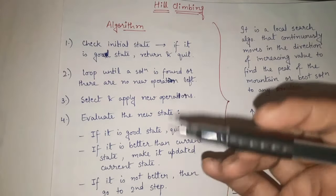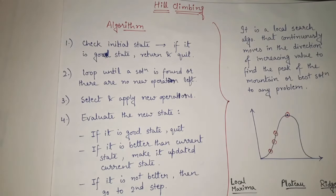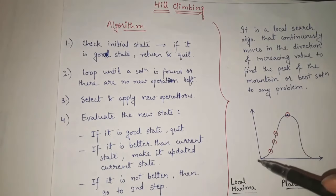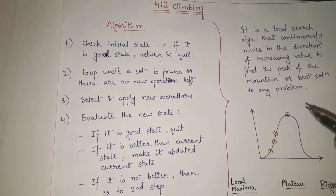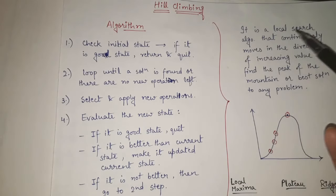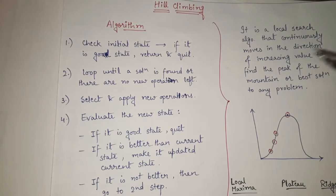In this video we will see in detail what the steps of the hill climbing algorithm are. We will try to understand it with the help of a diagram, and we will also see the main disadvantages or limitations. Hill climbing is a local search algorithm that continuously moves in the direction of increasing value to find the peak of the mountain or the best solution to any problem.